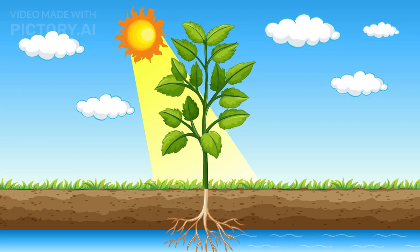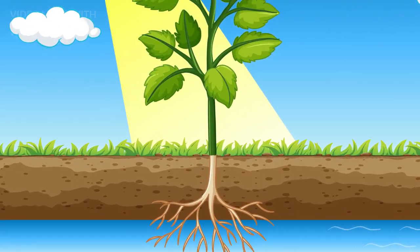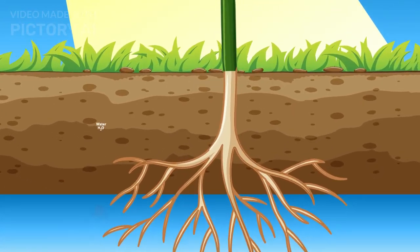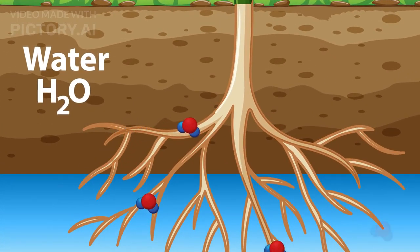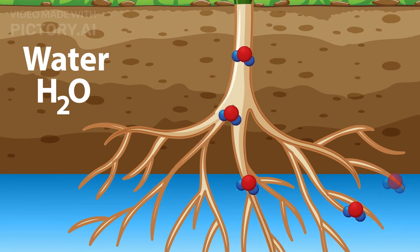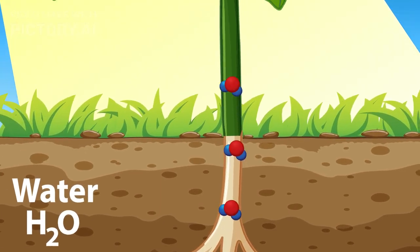Plant cells also contain chloroplasts, the site of photosynthesis, where light energy is converted into chemical energy.